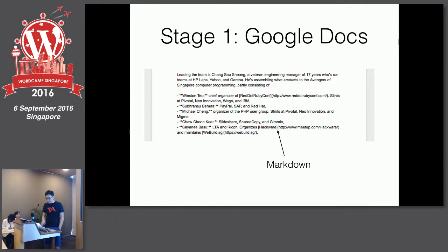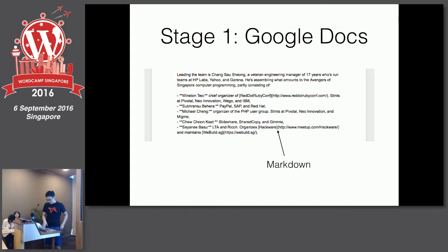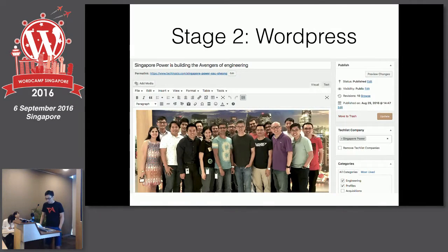We use something called Markdown, which I'm sure some of you are familiar with. Markdown is a very easy way to write HTML without actually knowing HTML. For example, this is basically an unordered list in Markdown. Then we move on to WordPress and upload the article.